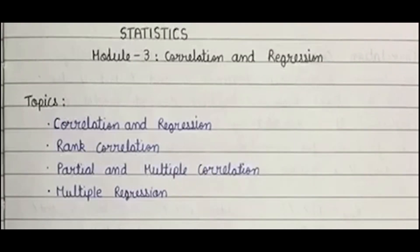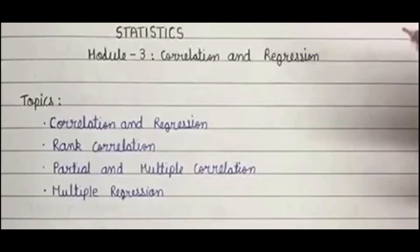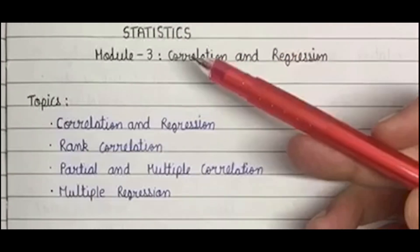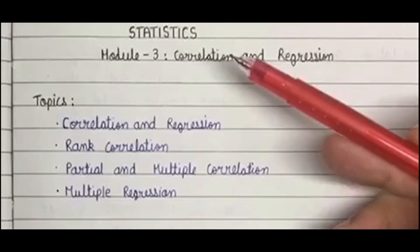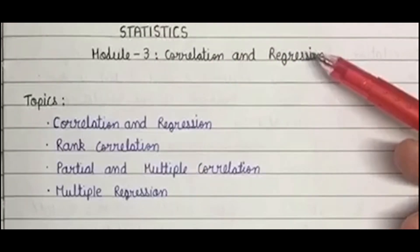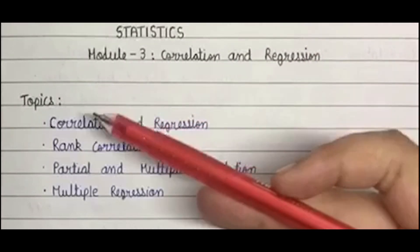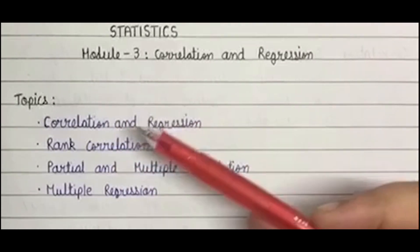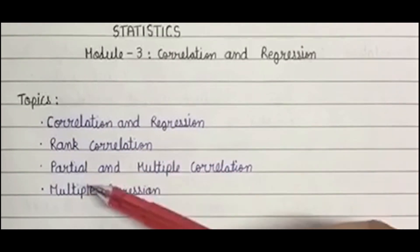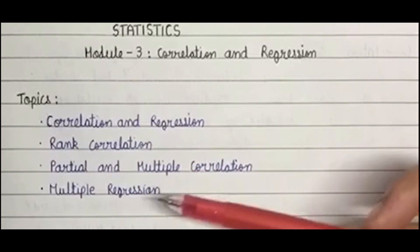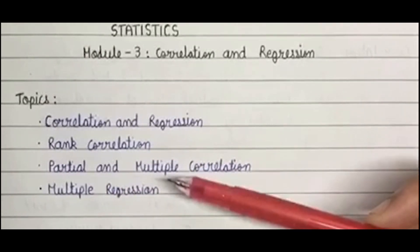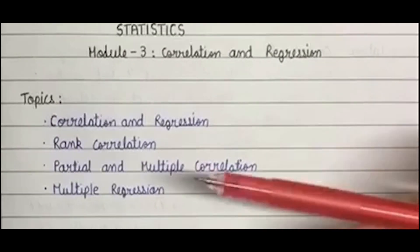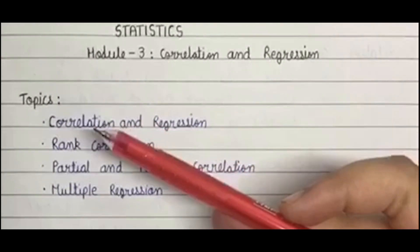Hello everyone, welcome to the Science YouTube channel. Today's topic for discussion would be Module 3, that is correlation and regression. The topics we will be covering under this module are correlation and regression, rank correlation, partial and multiple correlation, and multiple regression. Now let us move to the first topic of the module, that is correlation.